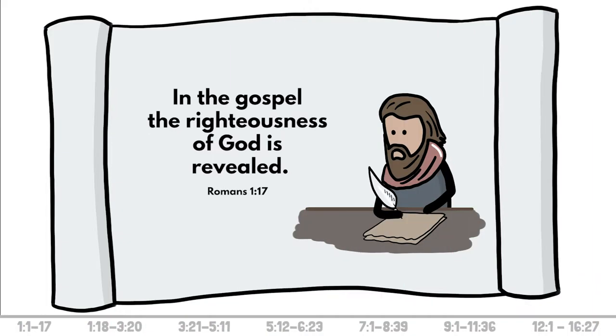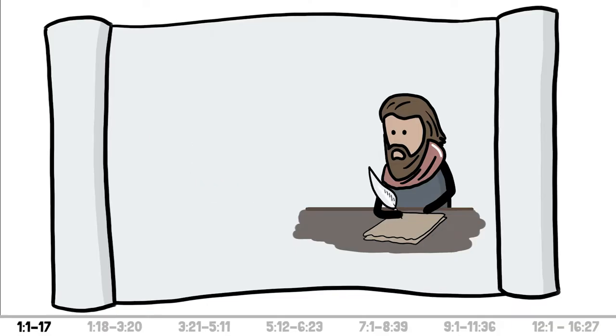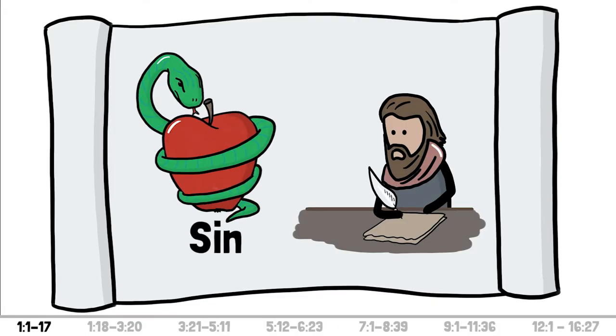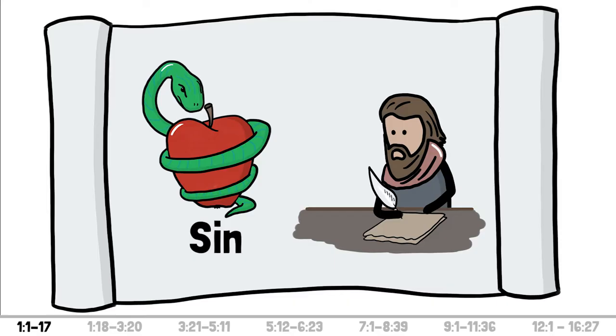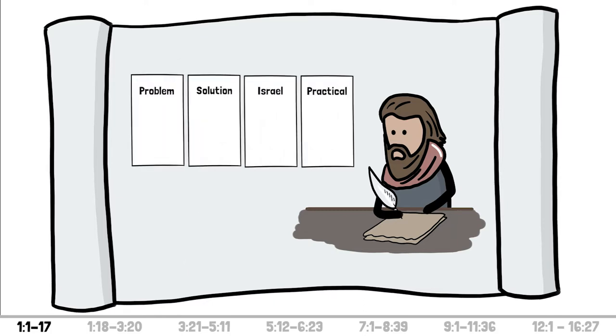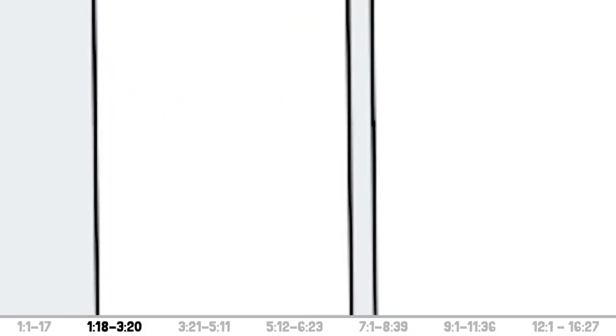In the first video, we saw that the Gospel displays that God is good and just. And furthermore, that there's a problem called sin. Sin is all that is not right towards God and others. This is why sin is also called unrighteousness. Looking at the structure of Romans, we'll first dive into the problem part.